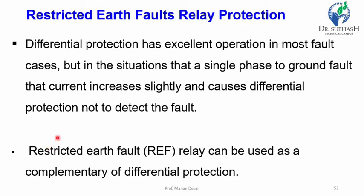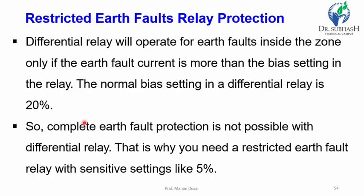Differential protection has excellent operation in most fault cases, but in a situation where a single-phase-to-ground fault current increases slightly, differential protection may not detect it. The restricted earth fault relay can be used as a complement to differential protection. The differential relay operates for earth faults inside the zone only if the earth fault current is more than the bias setting — normally 20%.